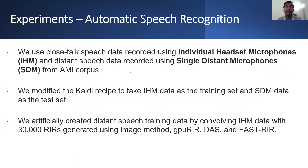For our far-field automated speech recognition experiment, we use close-talk speech data recorded using individual headset microphones and distant speech data recorded using a single distant microphone from the AMI corpus. We modified the CARDI recipe to take the IHM data as the training set and SDM data as the test set. We artificially created distant speech training data by convolving IHM data with 30,000 room impulse responses generated using the image method, GPU RIR, diffuse acoustic simulator, and fast RIR.